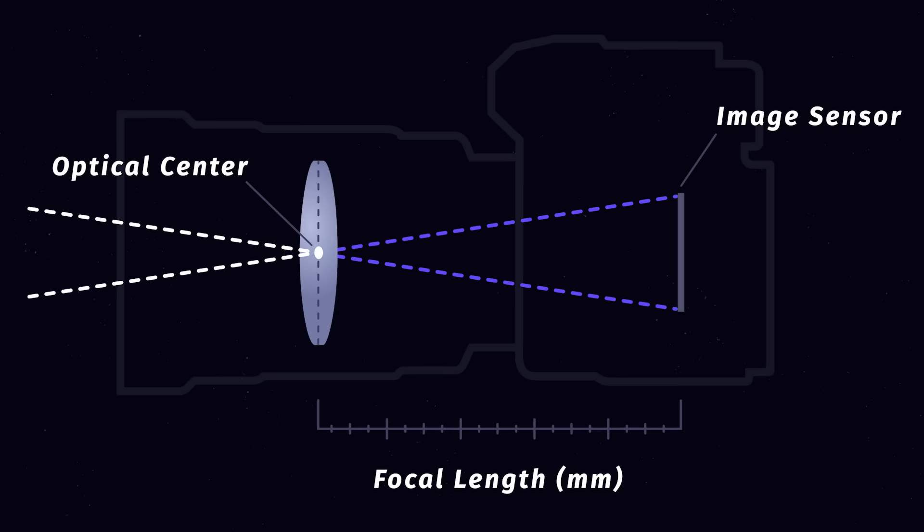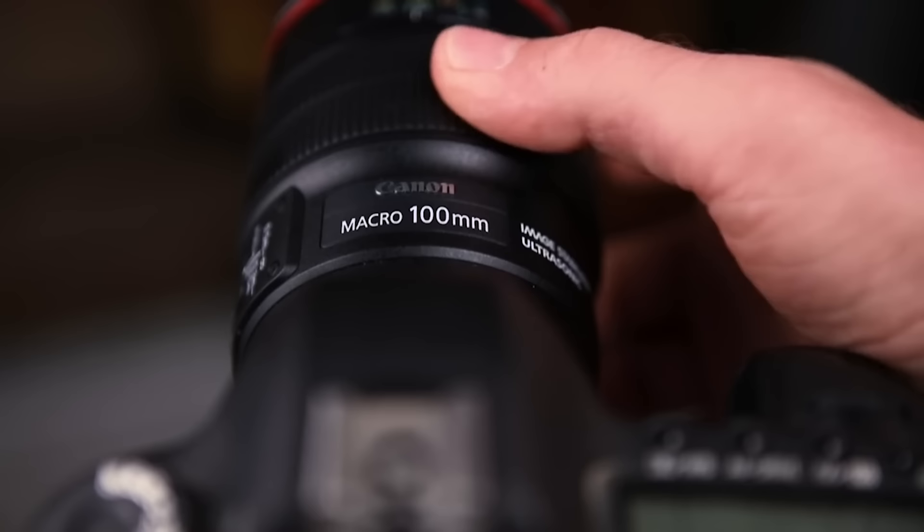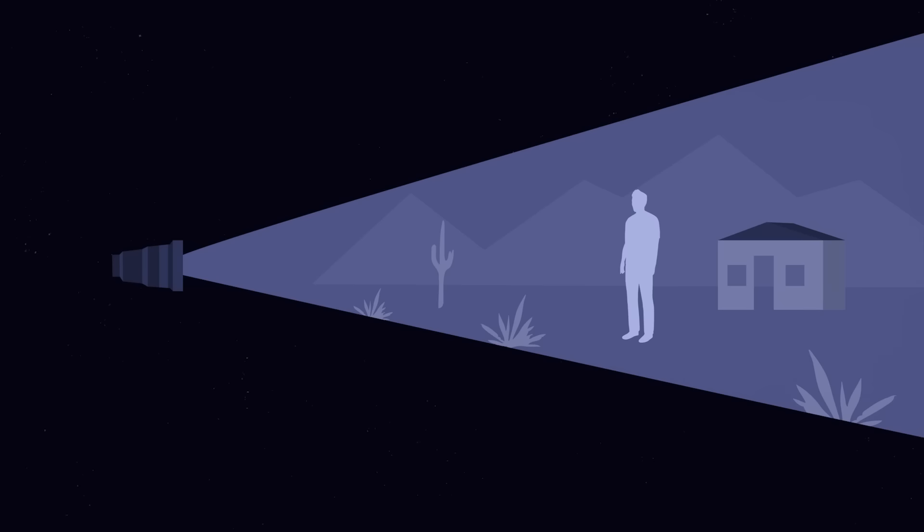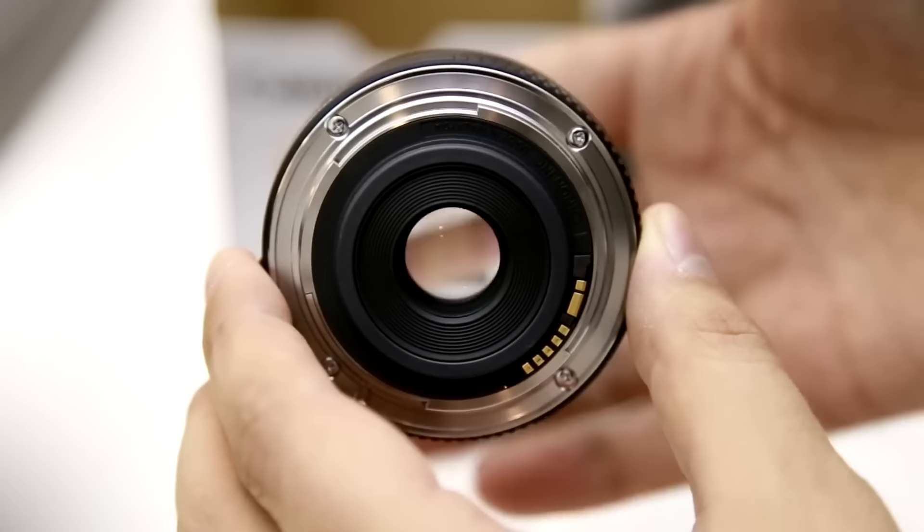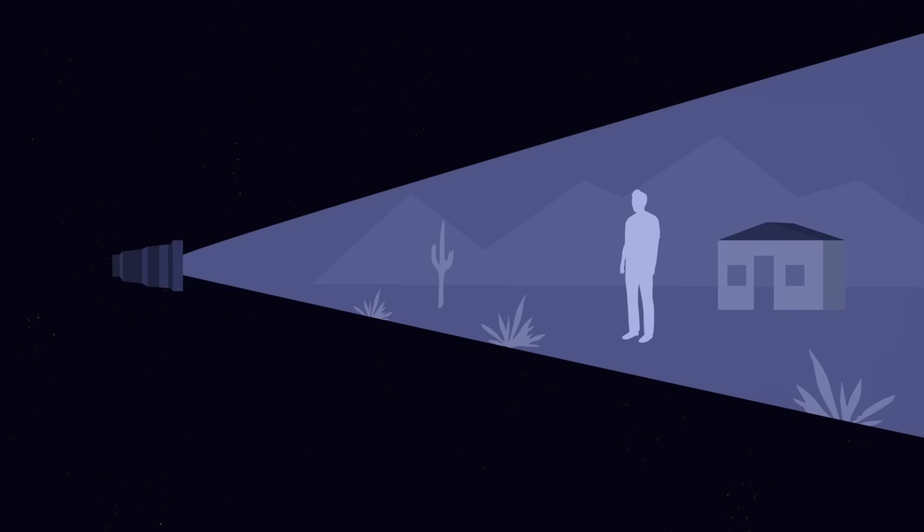Focal length is simply the distance between the optical center of a lens to the image sensor. The longer the focal length, such as 100 millimeters, the more narrow your angle of view is. The shorter the focal length, such as 24 millimeters, the wider your angle of view.